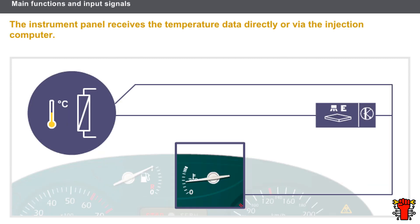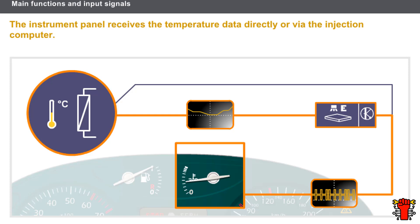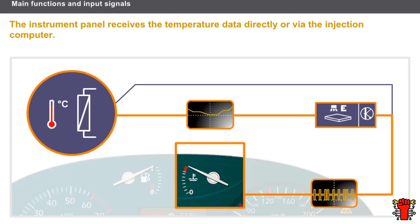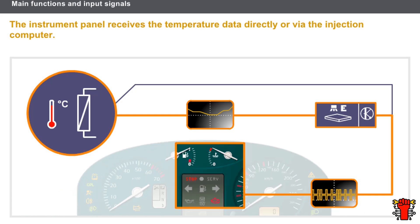Let's now look at how a coolant temperature gauge works. The coolant temperature sensor consists of an electronic negative temperature coefficient sensor. On some vehicles, data from the resistor is transmitted directly to the Instrument Panel. On recent vehicles, these data are transmitted to the Injection Computer, which sends information about the coolant temperature to the Instrument Panel through the multiplex network. An engine fault warning light comes on if the engine overheats, and the stop indicator also comes on, requiring the vehicle to stop immediately.